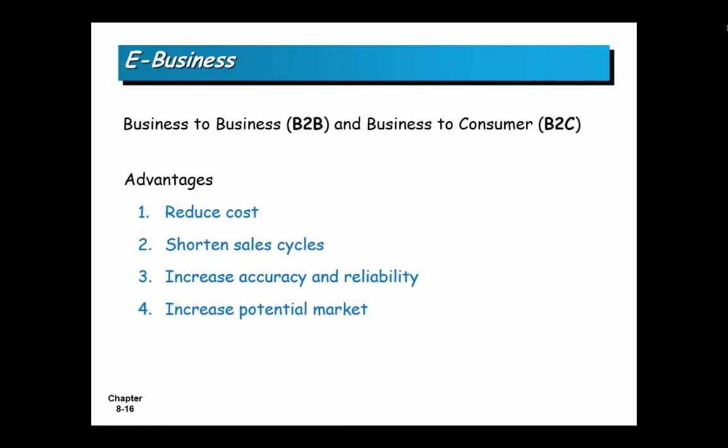The advantages of e-business from the seller's perspective: it reduces cost with fewer employees — Amazon has the customer doing the data entry when they order. It shortens the sales cycle because if the initial order is automated, everything after it can be automated. Taking hands off the process quickens it and reduces errors. It increases accuracy and reliability because computers don't make mistakes — people make mistakes.